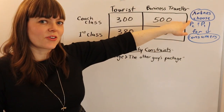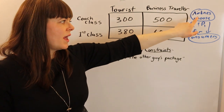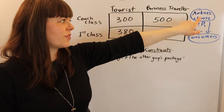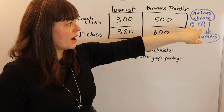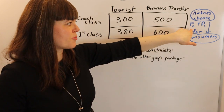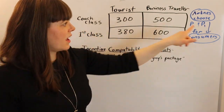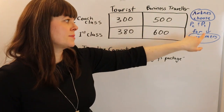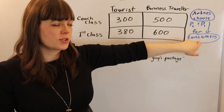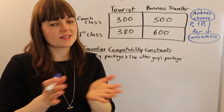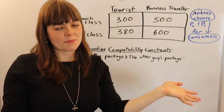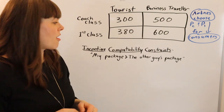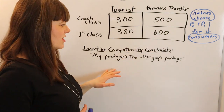The airlines are in the principal role and the consumers are in the agent role. The airline's choice variables — in this case two variables — are the price of the coach class ticket and the price of the first class ticket; these are exogenous variables for the consumers. The consumers' choice is simply which type of ticket to buy. So let's start with our incentive compatibility constraints.